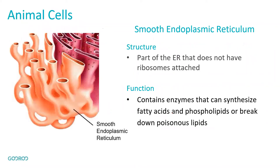Moving on to the next organelle, we have the smooth endoplasmic reticulum. This is part of the endoplasmic reticulum, or ER, but it does not have ribosomes attached. Its function is that it contains enzymes that can synthesize fatty acids and phospholipids, or it can break down poisonous lipids.